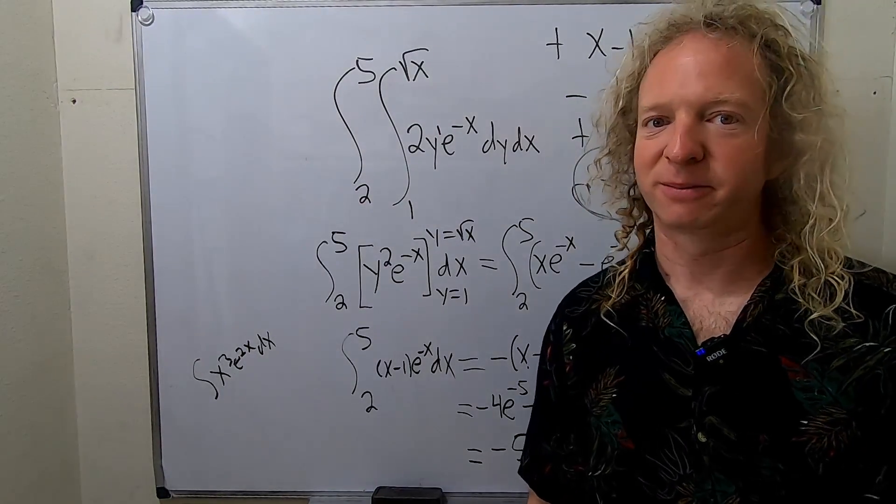You can use tabular whenever you can integrate one factor and differentiate the other, and after repeated differentiation that factor eventually reaches zero. Here the derivative of x minus 1 is 1, then 0, and e to the negative x is easy to integrate. Another example would be x cubed times e to the 2x — if you keep differentiating x cubed, eventually it's zero.